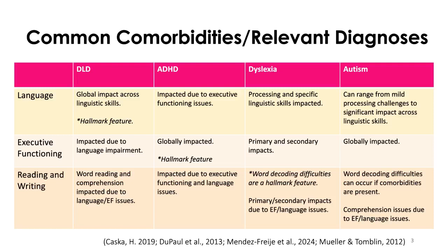With dyslexia, the primary hallmark is word decoding difficulties, but you can also see an impact on linguistic processing and on executive functioning. Those aren't the hallmark characteristics, but there's a chance the individual will also be impacted in language and executive functioning and need intervention in both. Comprehension can be impacted as well due to both word decoding difficulties and executive functioning issues.